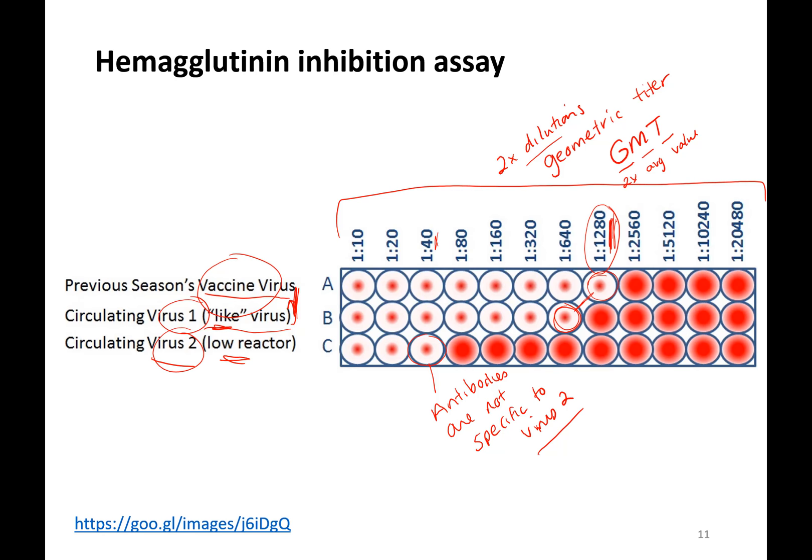Higher dilution, which will be expressed as 1280 (not 1-to-1280) — the higher the number, the higher the bar — means the more the antibodies could block hemagglutination, which means the antibodies were specific to that type of virus. You're going to see hemagglutinin assays in Figure 3.